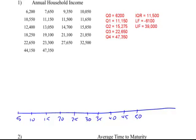First things I'm going to plot are my box in the middle. My box in the middle is from Q1 to Q3. So Q1 is at $11,150, about right there. Q2 is at $15,275. And Q3 is at $22,650. So there's my box.